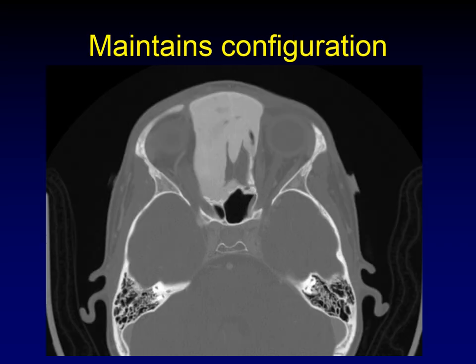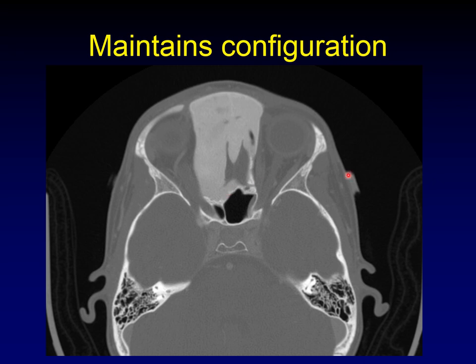One of the important things about fibrous dysplasia is that it maintains the configuration of the underlying bone — this is probably the most important diagnostic clue. Notice that the crista galli is still visible sticking up from the anterior skull base. The lamina papyracea, while incredibly thick, still has the basic shape of the lamina papyracea. Even the anterior wall of the sphenoid sinus retains its shape. So fibrous dysplasia expands a bone but maintains the underlying configuration of that bone.